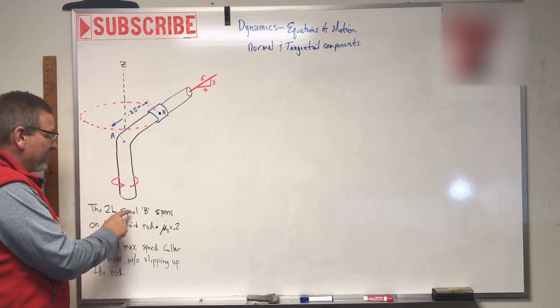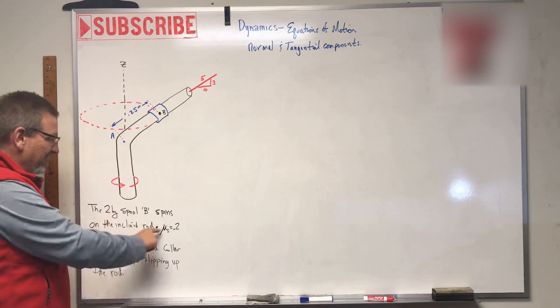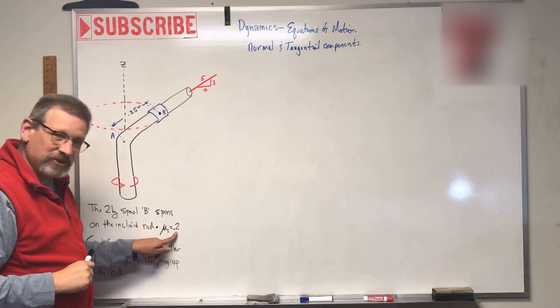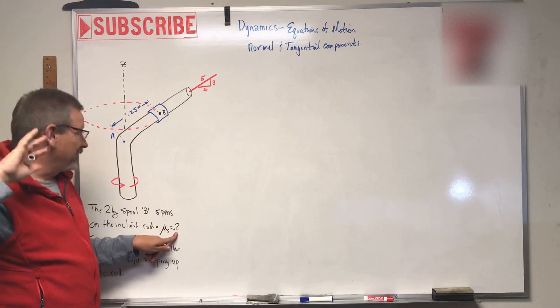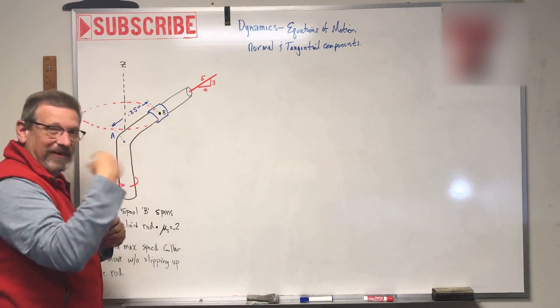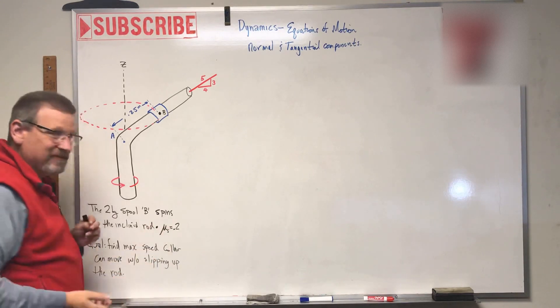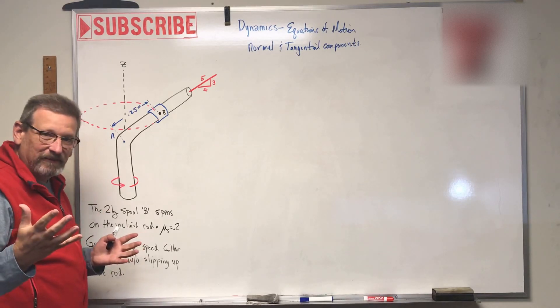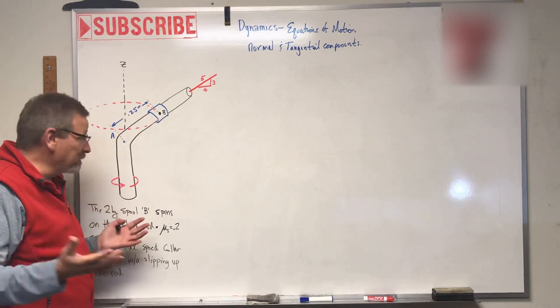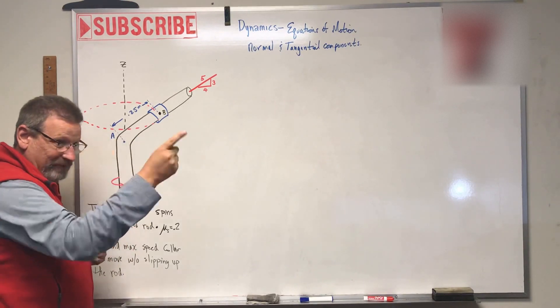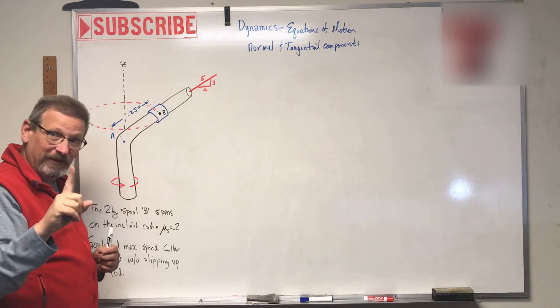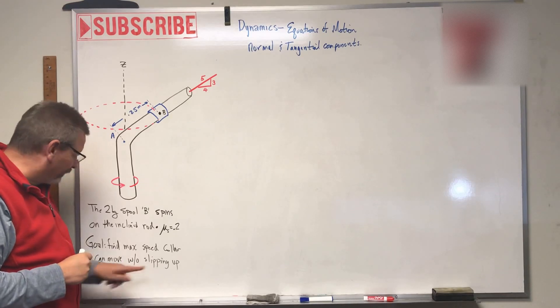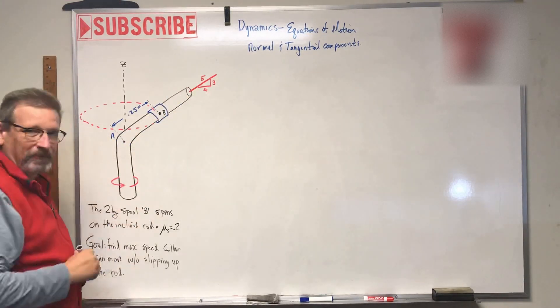They tell us that the two kilogram spool B, which is this guy here, is spinning on an incline rod. As it goes around, it's staying in that position. Mu sub s is 0.2. This time they didn't even try and trick us with kinetic because we know that the thing is not sliding, it's staying where it is. And so in order for it to stay, we need static friction coefficient. Find the max speed without slipping up the rod.